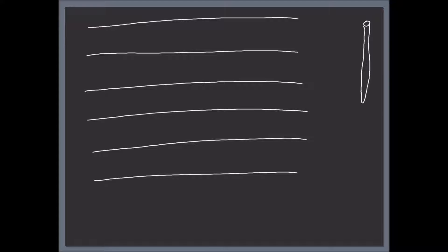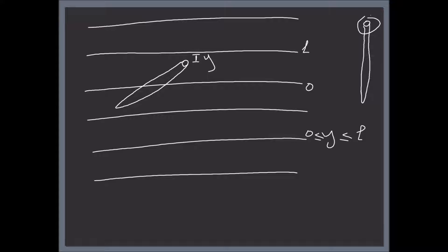Let's suppose that the 'I' end — this end here — lands at a distance Y from a line. If we threw this randomly, the needle might land somewhere here. Let's call this distance Y. So Y sits between zero and L; Y can be any value between zero and L.